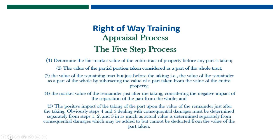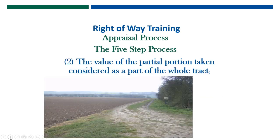We're going to talk about the larger parcel and another portion of the five-step process. The value of the partial portion taken is considered as a part of the whole tract. That simply means: if the acquisition is coming off a 100-acre tract, then the properties used to develop the valuation also have to be 100-acre tracts. If it's coming off a 10-acre tract, then the comparables you use would be from a 10-acre tract. If you are being acquired from a one-acre tract, then you will compare it to other one-acre tracts.